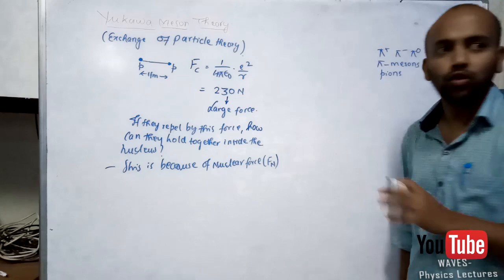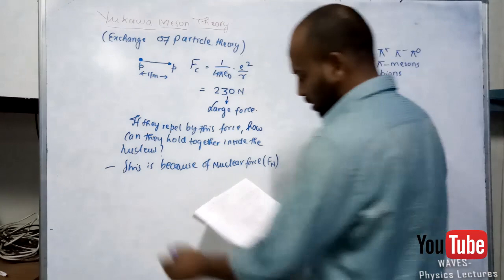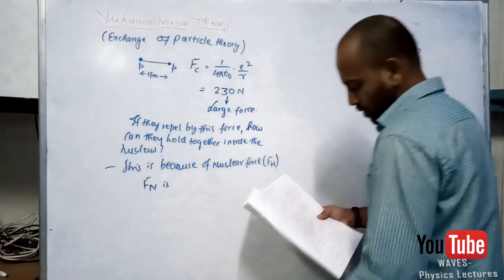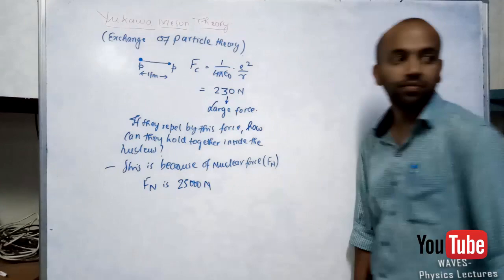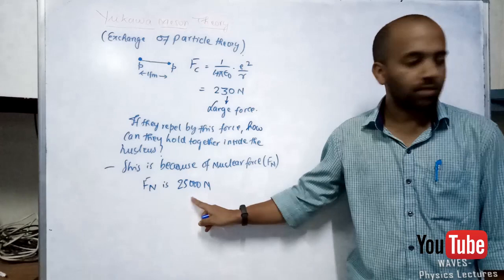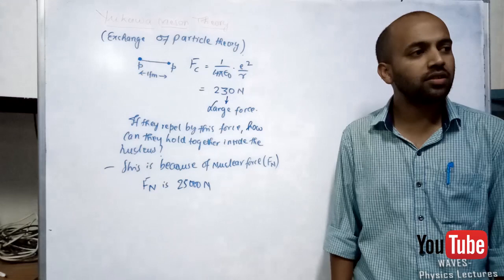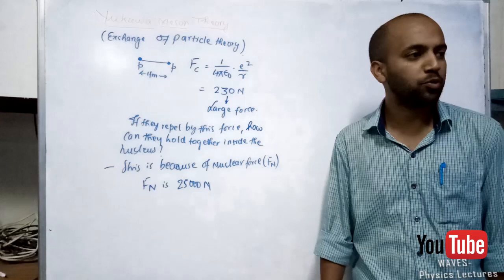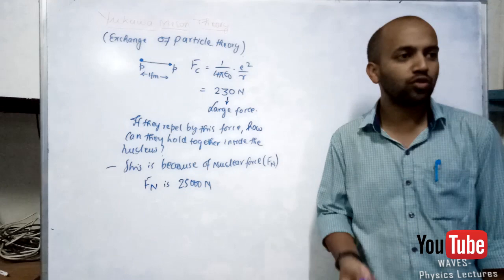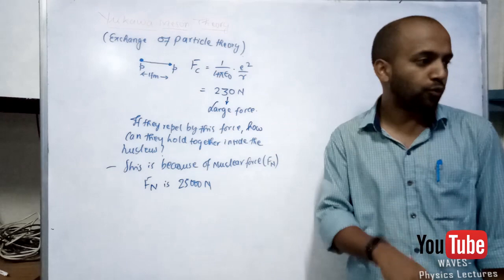If you calculate this nuclear force using the equations, it comes out to be approximately 25,000 newton — much larger than the Coulomb repulsion of 230 newton. So the nuclear force is enormously stronger. Also, nuclear forces are charge independent, meaning this force acts between proton-proton, neutron-neutron, and neutron-proton — nothing to do with charges.